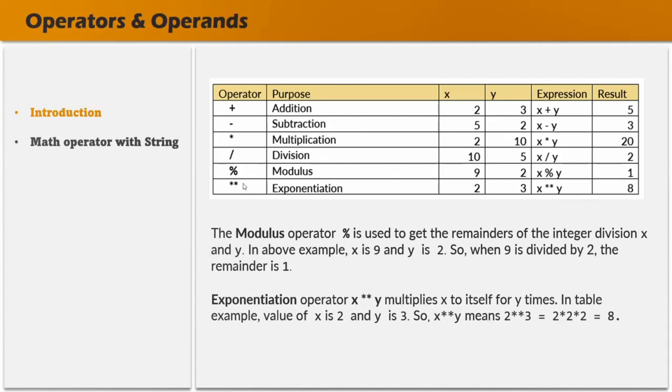We also have the exponentiation operator, which gives you the result of x to the power y. For example, if x is 2 and y is 3, the exponentiation operator — these two asterisks — will return the result of 2 to the power 3, which is 8. Always remember that an operator will always return a value. When you use the plus operator on two operands, it returns a result.